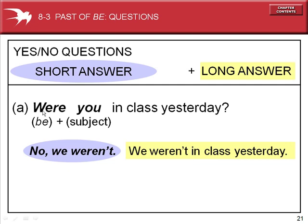For the negative: 'Were you in class yesterday?' Short answer: 'No, we weren't.' Long answer: 'We weren't in class yesterday.' The long answer repeats the subject, the verb, as well as the rest of the sentence.